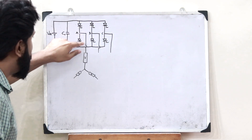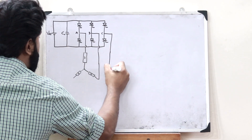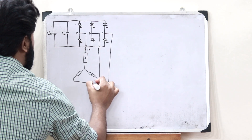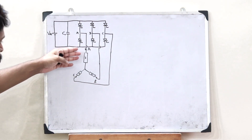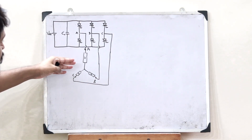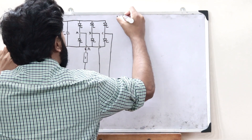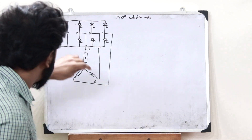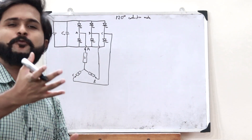The terminal of phase A is connected here, phase B here, and phase C here. So three impedances are connected in the star configuration. What do you mean by the term 120 degree conduction mode? It's very simple — it just means that each of these switches will be on for 120 degrees.